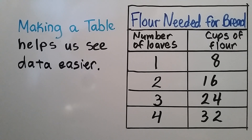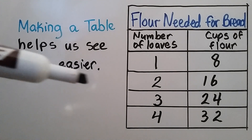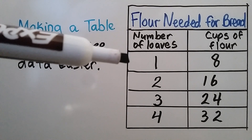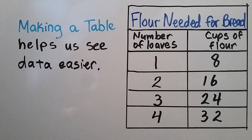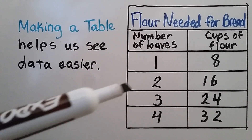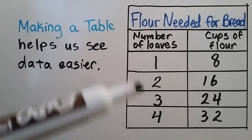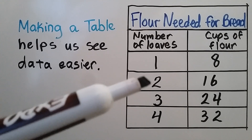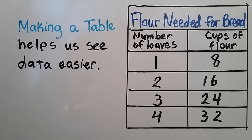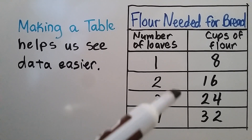Flour needed for baking a loaf of bread: if we know one loaf of bread needs eight cups of flour, we can make a table to figure out how many cups of flour we need for four loaves, or two, or three. For two loaves, we would do 2 times 8, which is 16.